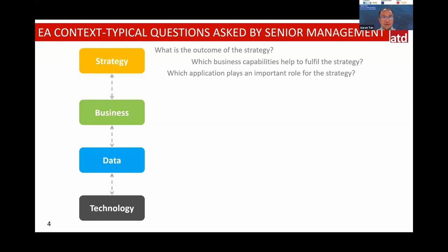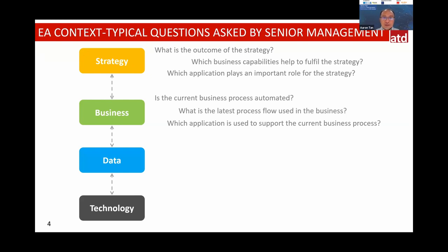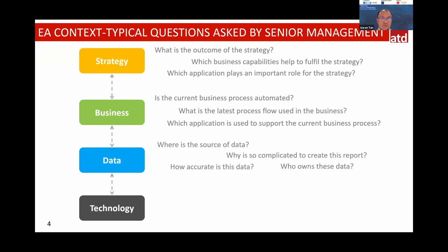We might ask for budget but how does that help the strategy? We need to answer that for key stakeholders. In terms of business, questions arise like: is the current business process automated? Some processes are still semi-automated — customers have complaints and the system cannot be accessed, login lockouts occur. Which applications are currently supporting the business process? Can we show the map?